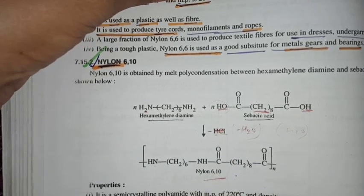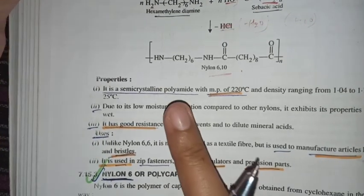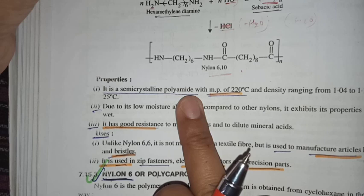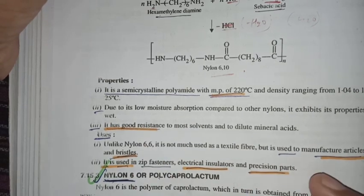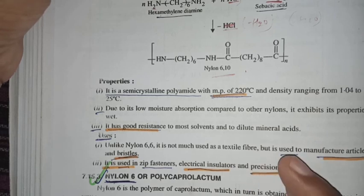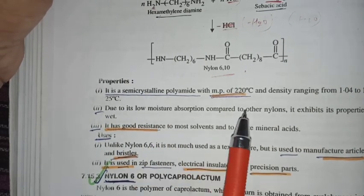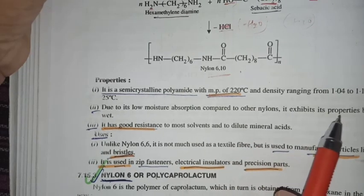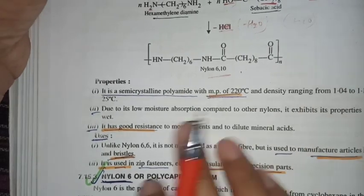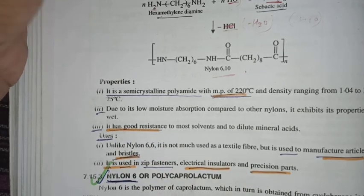If we talk about property, this has semi-crystalline polyamide. It has good resistance to most of the solvent and dilute mineral acids. Due to its low moisture absorption compared to other nylons, it exhibits its property better when wet, wet means if it is green then it gives more properties.